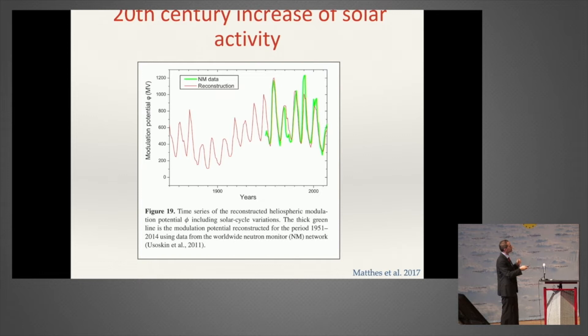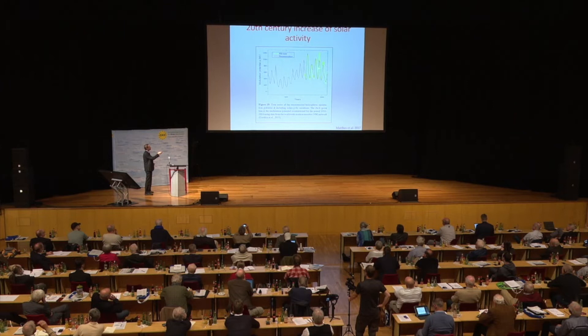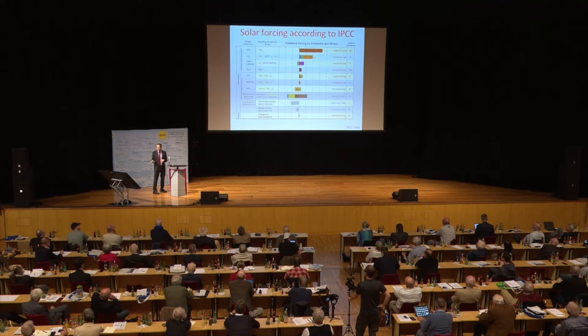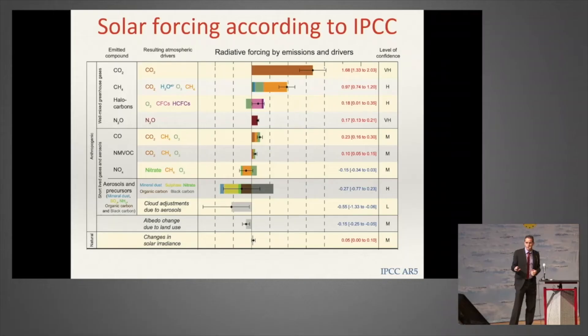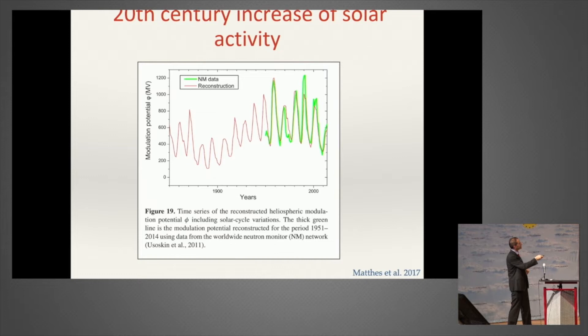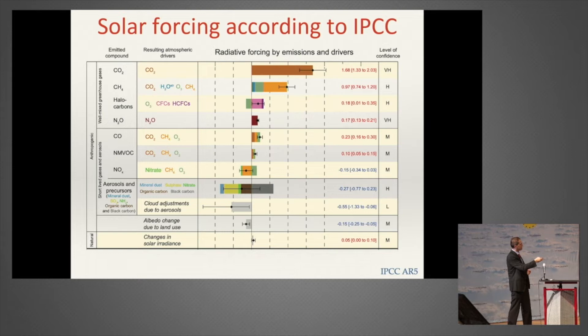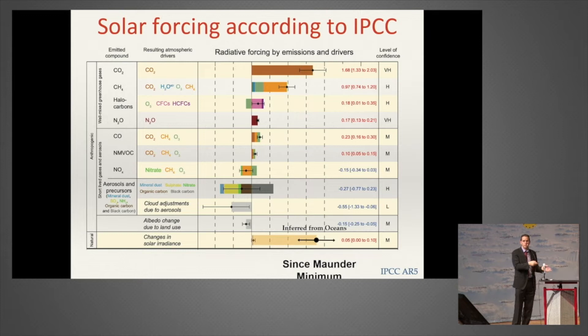What does this mean for understanding the 20th century warming? We see that over the 20th century, solar activity increased. Therefore, if the sun has a large effect on climate, it means that some of the warming should be attributed to the increase in solar activity. Taking the increase in solar activity and the forcing that we measure, we can calculate what the contribution should be—and this is something that the IPCC models are completely missing.